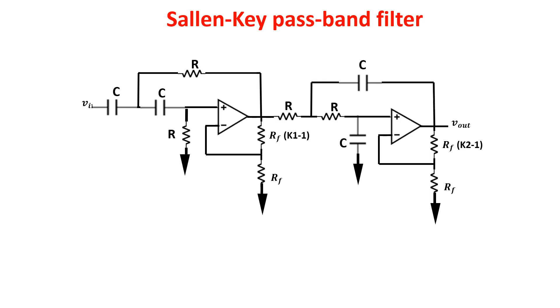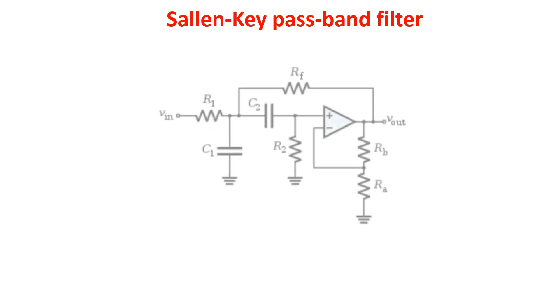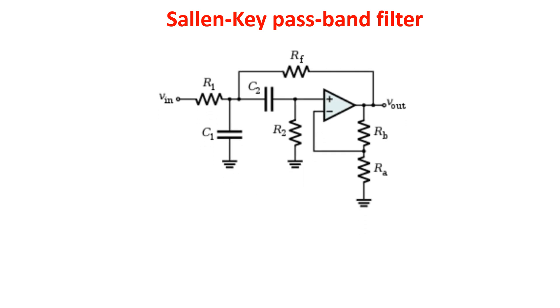A passband filter can be created cascading a high-pass filter and a low-pass filter or with this topology here. Of course this is a second order filter and the previous one a fourth order filter.